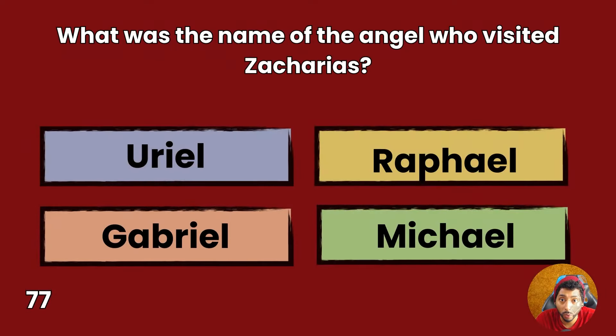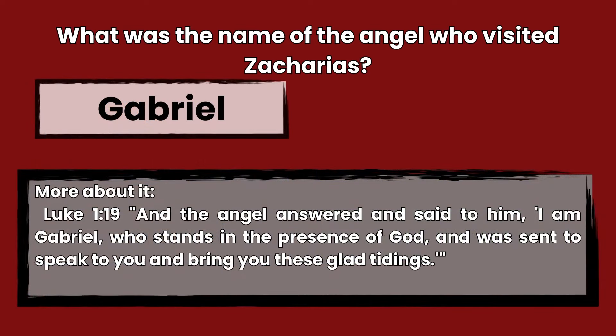Question 77: What was the name of the angel who visited Zechariah? Uriel, Raphael, Gabriel, or Michael? Answer: Gabriel. Luke 1:19 — And the angel answered and said to him, I am Gabriel, who stands in the presence of God, and was sent to speak to you and bring you these glad tidings.